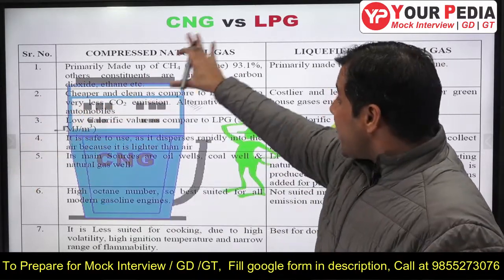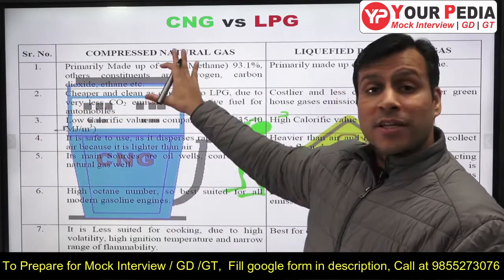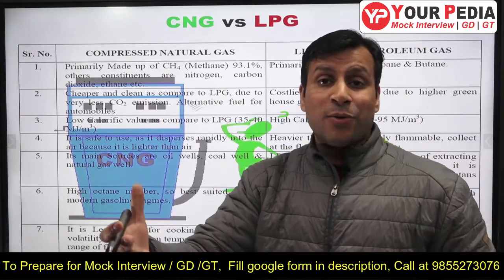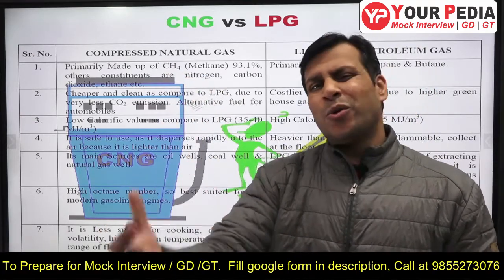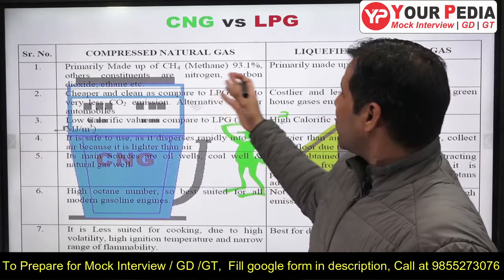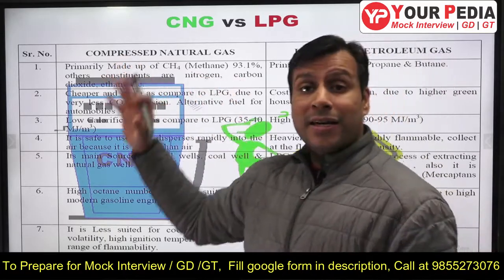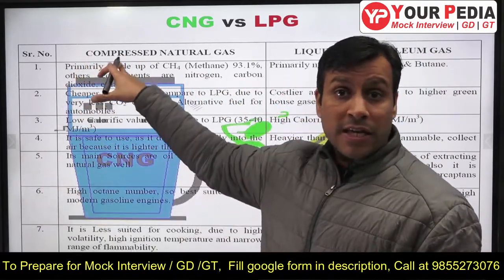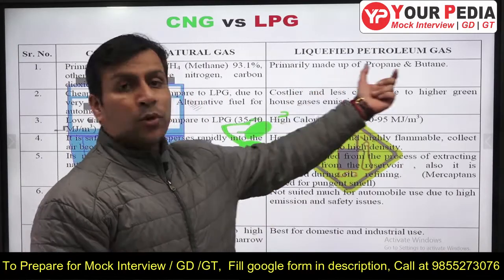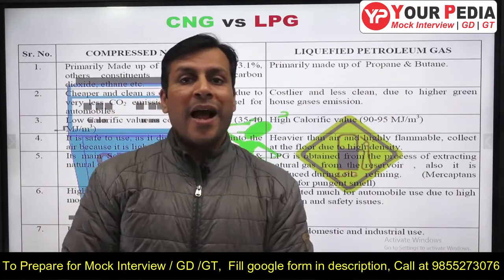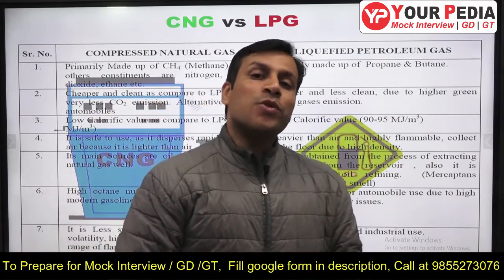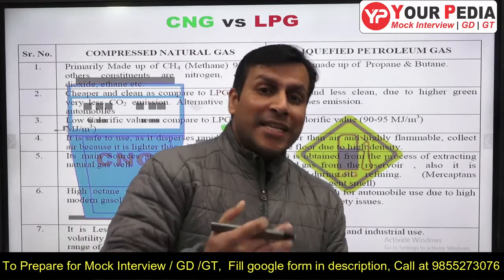The main component of CNG is methane — close to 93% — but other components include nitrogen, carbon dioxide, and ethane. In the case of LPG, the main components are propane and butane.